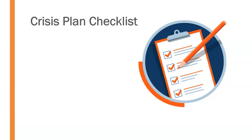Let's take a look at the crisis plan checklist. First of all, we have to make sure that our leadership is visible. We can't have the leaders of our organization go somewhere and hide — avoid the public, avoid the media, avoid everything. Just the opposite: we need our leadership and the faces of our organization to be out front and visible, communicating what's going on, what we're doing as a result, and how our organization is working to resolve this crisis. Even in situations not of our own making, like a natural disaster in our community, our leadership needs to be visible both for the sake of employees and the community.